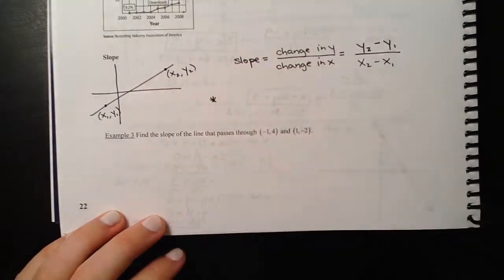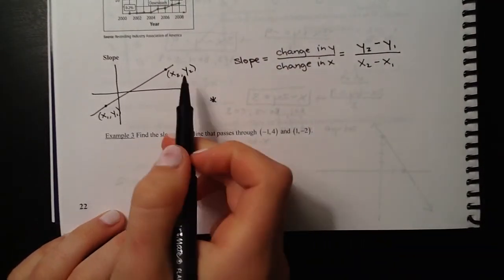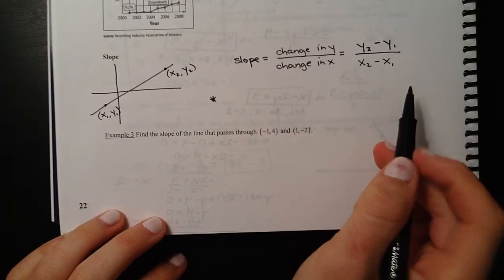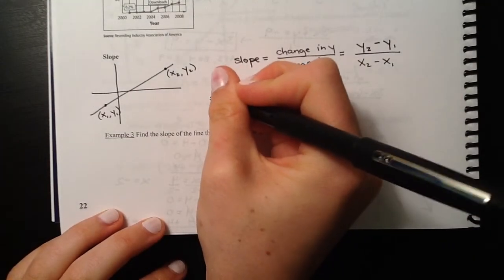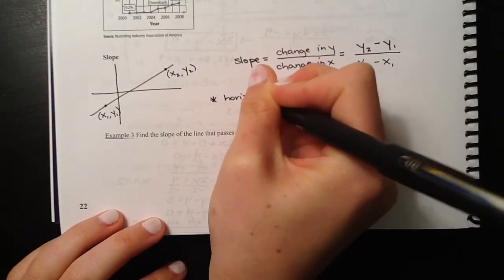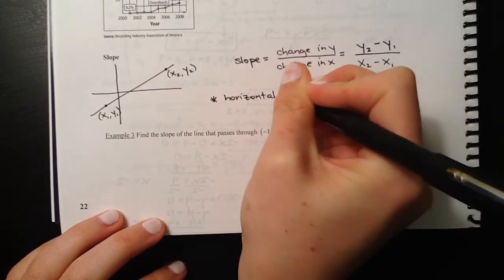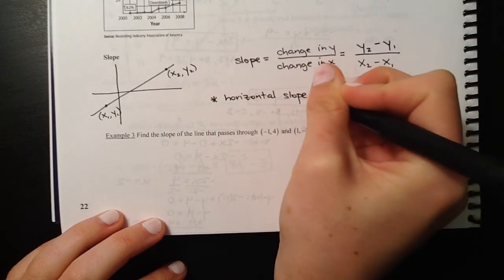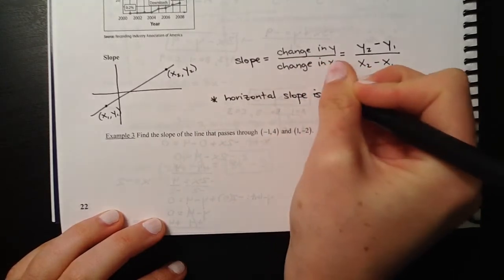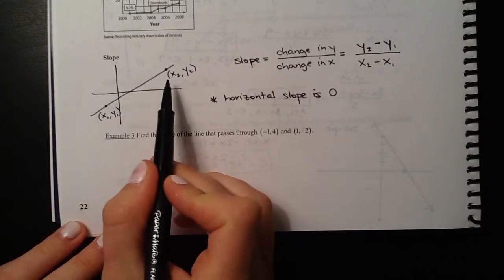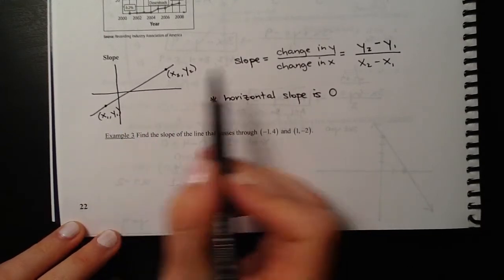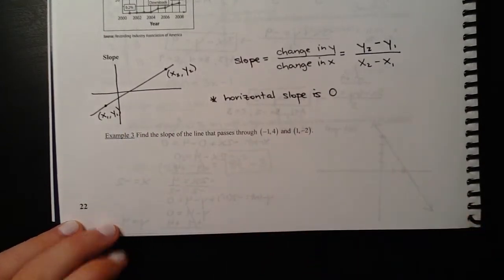Just so you know, we have two other types of lines. Most of our lines are diagonal, so they'll have some sort of numerical slope. We could also have horizontal lines. A horizontal slope is 0. If you just have a straight line, there's no change in y. Since there's no change in y, the numerator would be 0, so your slope would be 0.